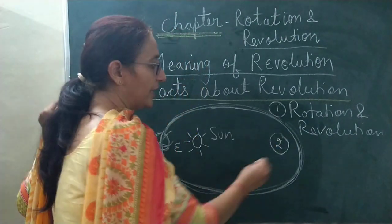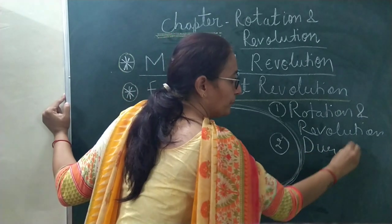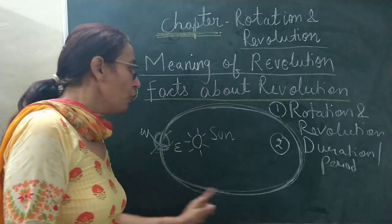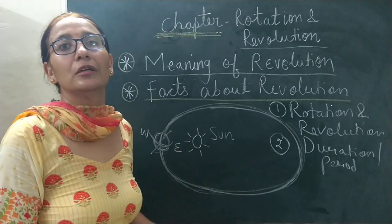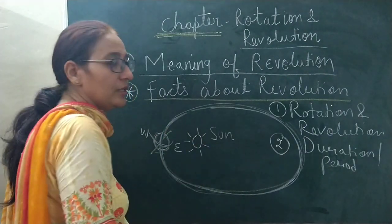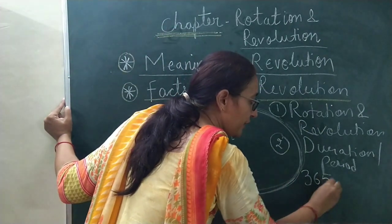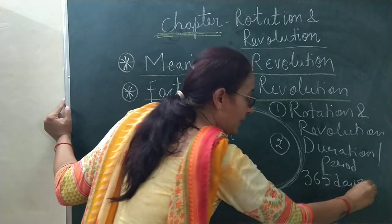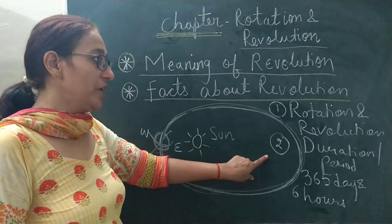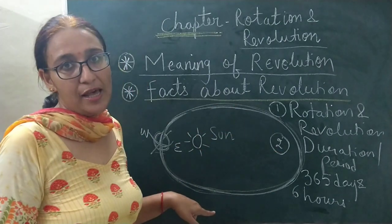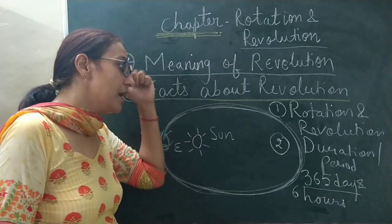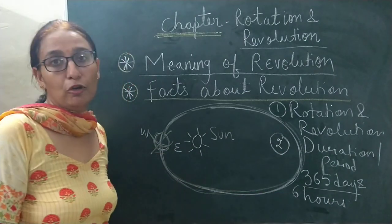Now what is the second interesting fact? Duration — or we can say, period. When earth moves around the sun, how much time does earth take to complete one revolution? Earth completes one revolution in 365 days and six hours. This is the second fact about the revolution of the earth.